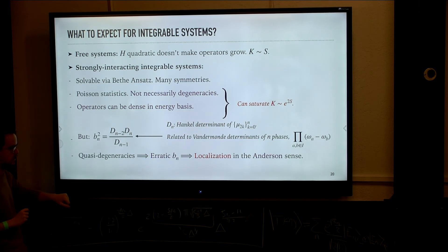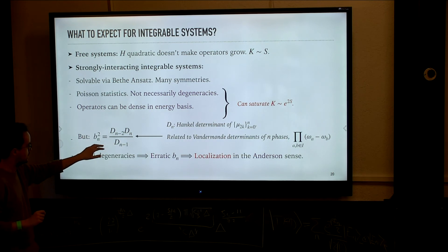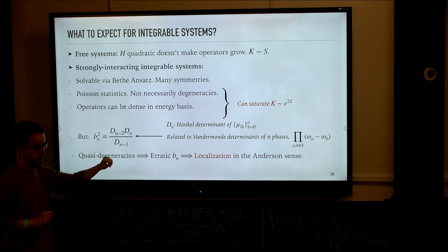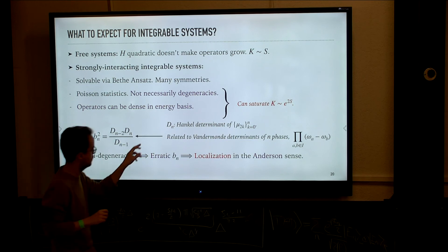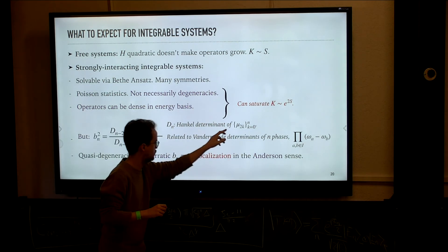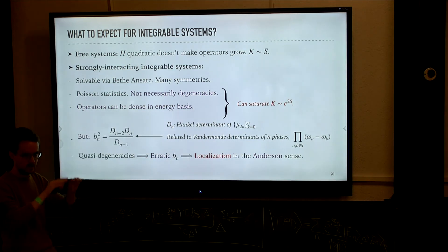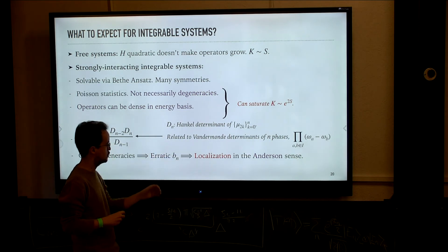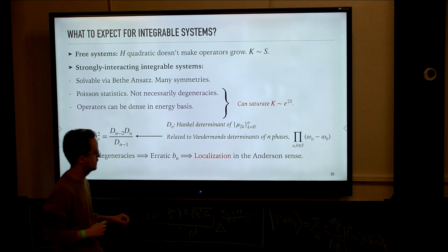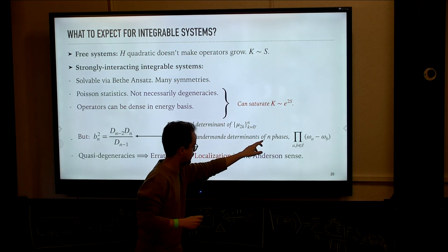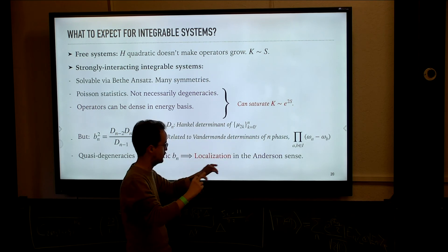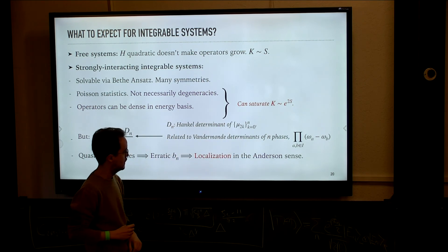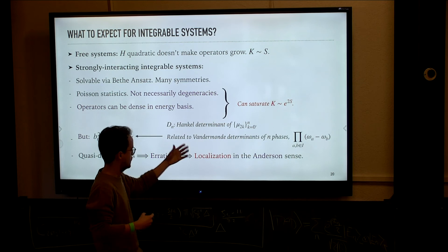If we want to go from moments to Lanczos coefficients, the relation involves ratios of Hankel determinants — a determinant of a matrix constructed from moments up to the nth moment arranged in a particular way. These Hankel determinants can be related to Vandermonde matrices of subsets of phases of the Liouvillian eigenstates, and the determinant of Vandermonde matrices is given by the product of differences of the ratios defining the geometric progressions of the columns.